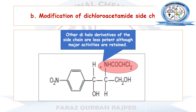Next is the modification of the dichloroacetamide side chain. In this side chain, we have two chlorine atoms. If we substitute these two halogens with any other halogen or other derivative functional group, it will also result in derivatives that retain antibacterial activity, but their potency will be lesser in comparison to the parent chloramphenicol drug.